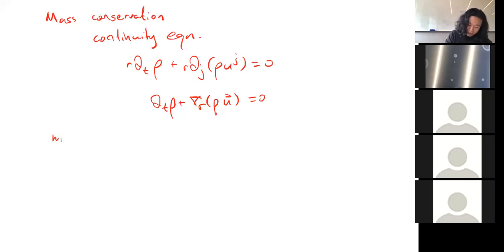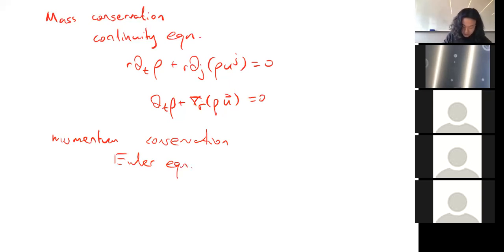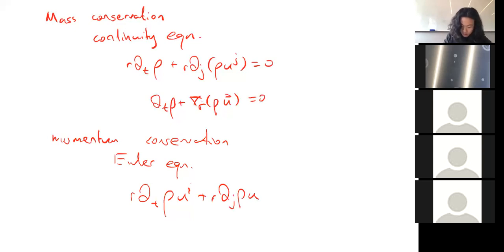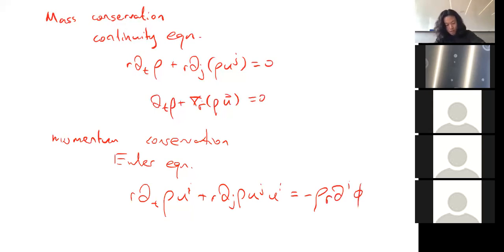From momentum conservation, you get the Euler equation: ∂ₜ(ρUᵢ) = ... The Euler equation is telling you that any change in the momentum or velocity of your fluid or matter has to be associated with either momentum transfer by colliding with other chunks of matter, or accelerating due to being in the presence of a gravitational field — in this case, the gravitational potential φ.